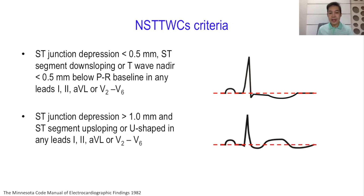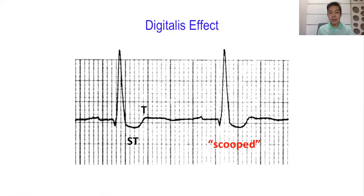The second criteria is that of an ST segment J-junction depression, this time more than 1 millimeter, but it is rapidly upsloping or U-shaped in the same leads. This second ECG morphology should be differentiated from the effect of digitalis on the ECG. Digitalis would induce J-junction or ST segment junction depression, but it is downsloping, and the following T wave will most commonly be diphasic.